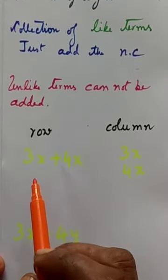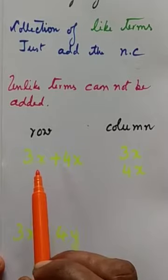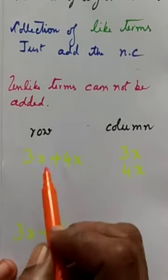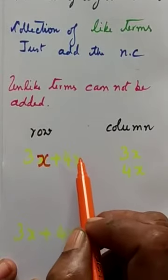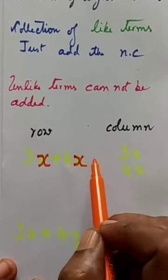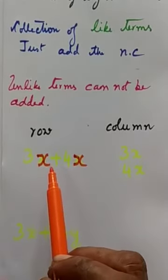Here they have given simple problem: 3x plus 4x. Both terms, both monomials here are like terms. x and x.